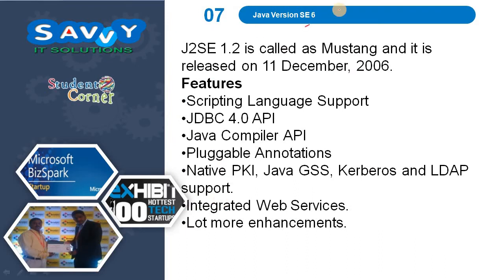Java 6 is released on 11th December 2006. Features include Scripting Language support, JDBC 4.0 API, Java Compiler API, Pluggable Annotations, PKI, Java GSS, Kerberos and LDAP support, Integrated Web Services, and a lot more enhancements.